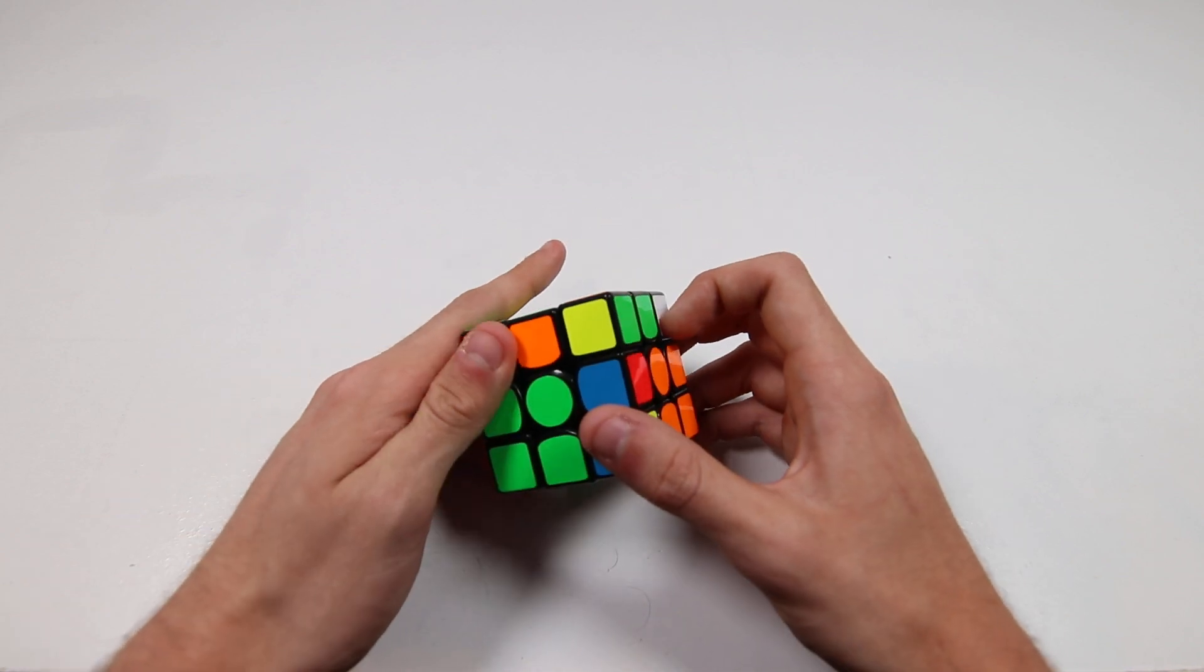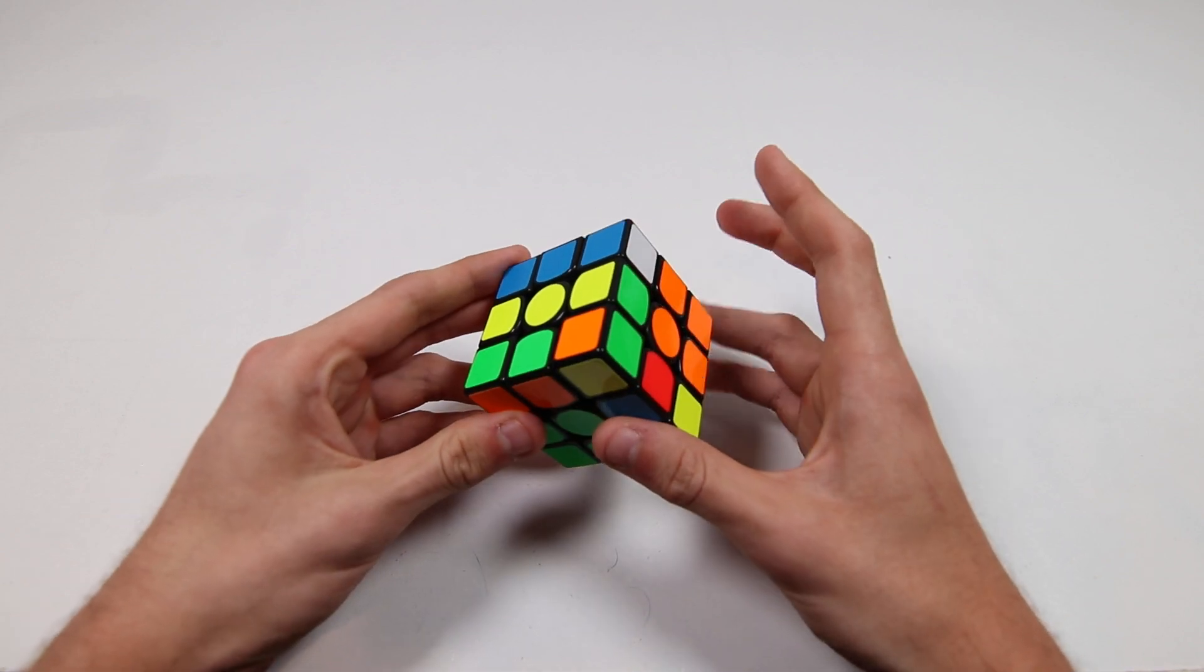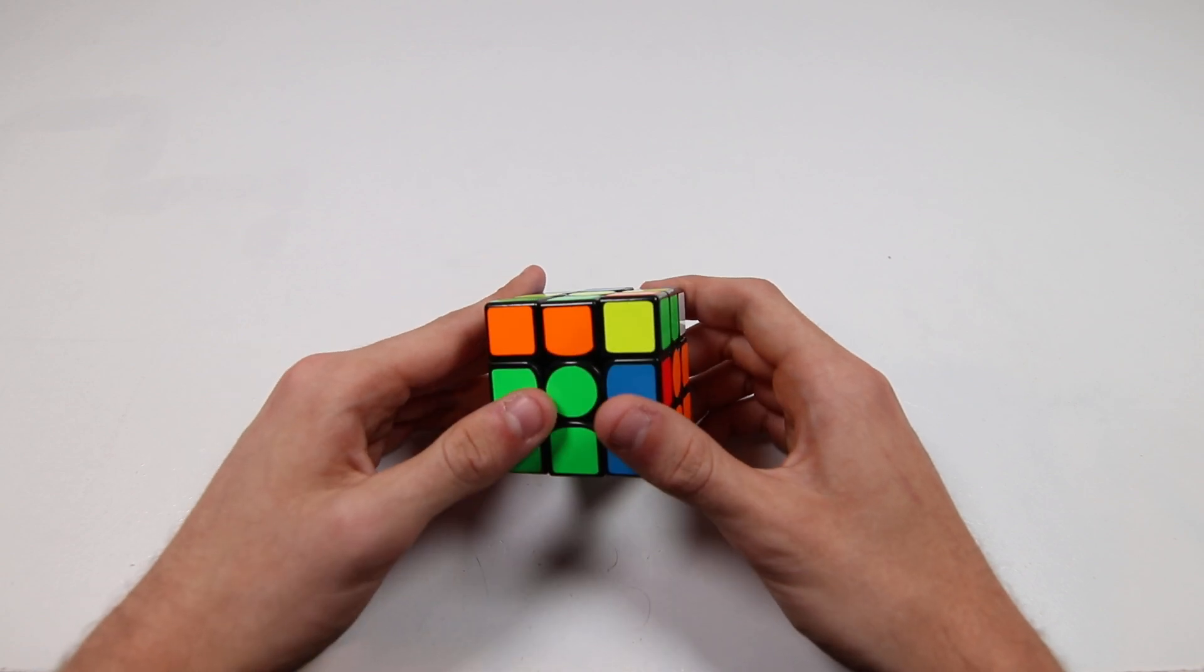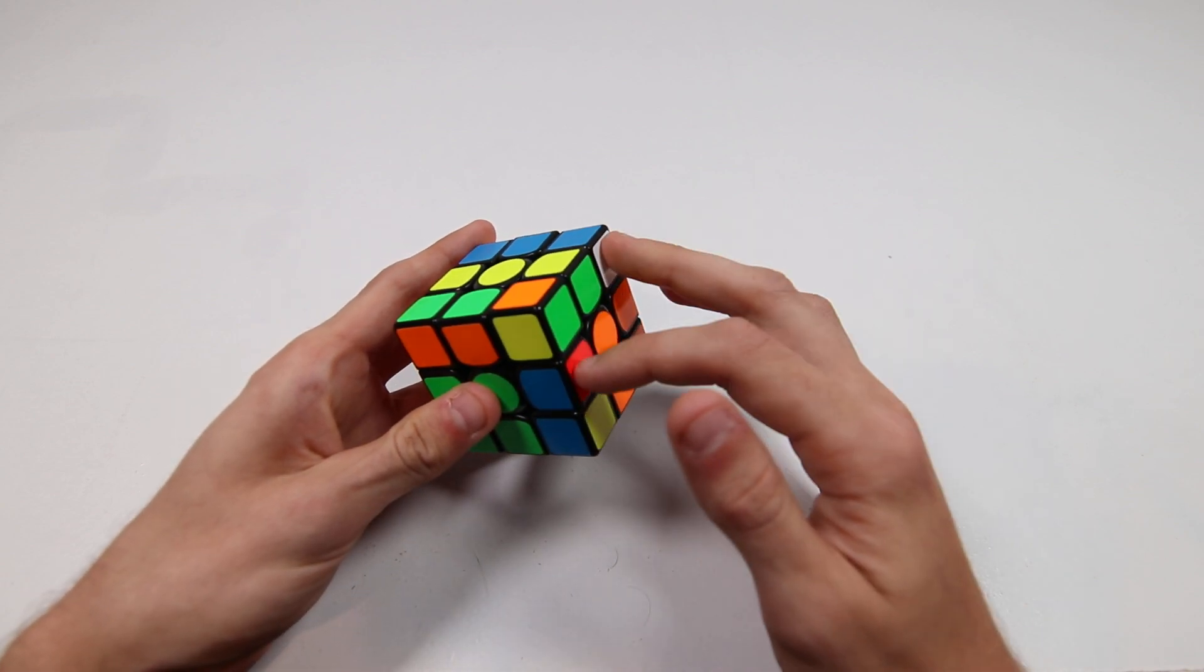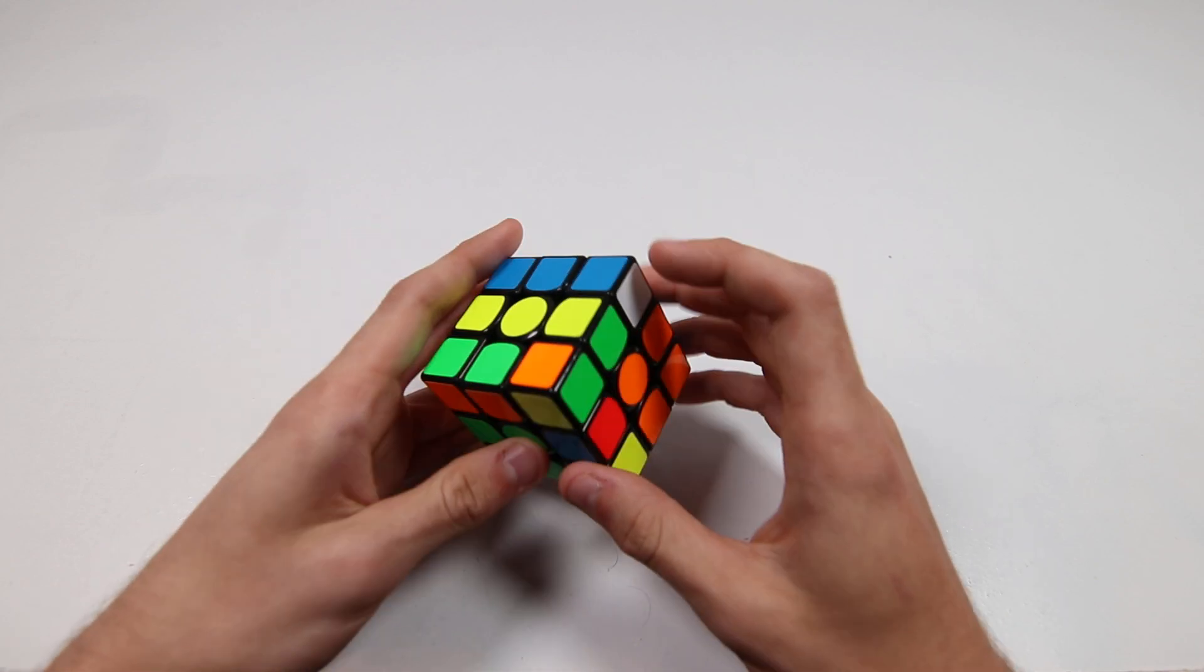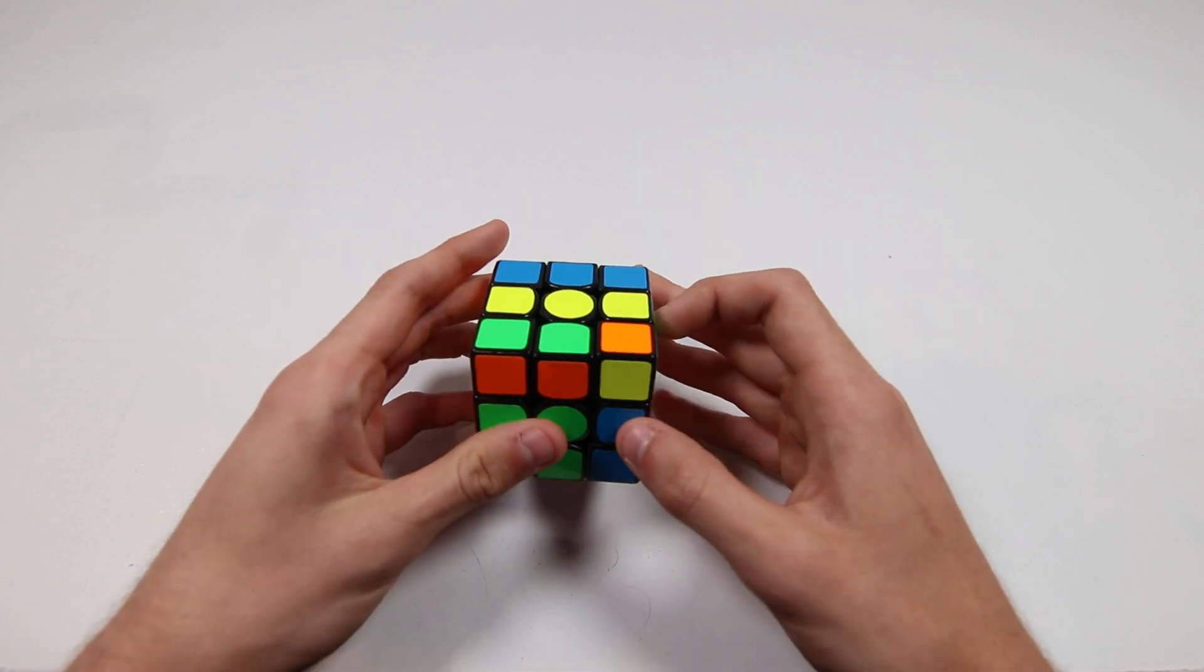Anyway, the idea is basically finding ways to force M'. What I mean by force M' is scenarios in F2L where we're solving this pair—ignore this, this doesn't really matter—we're talking about the blue and red pair.